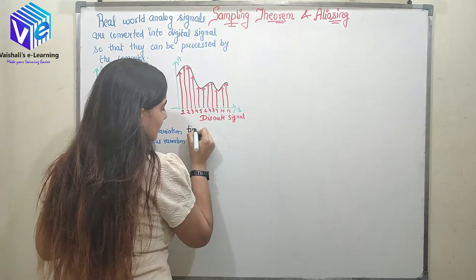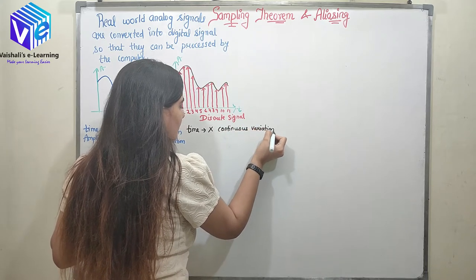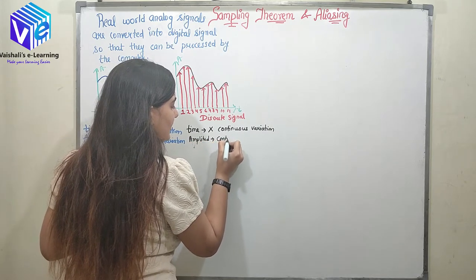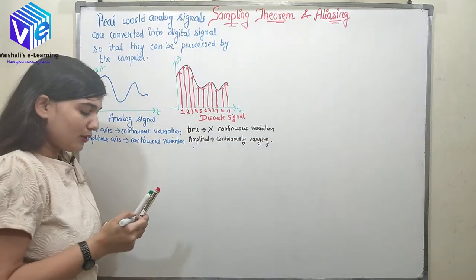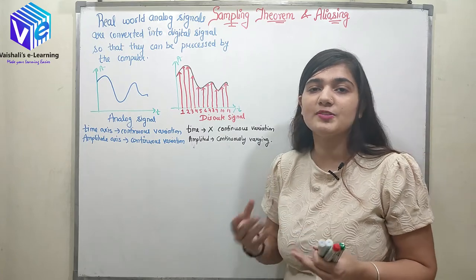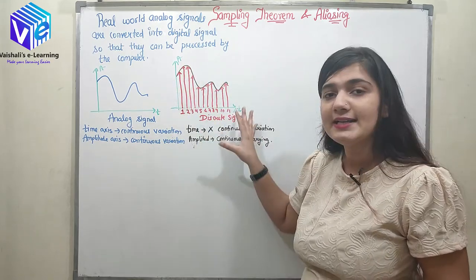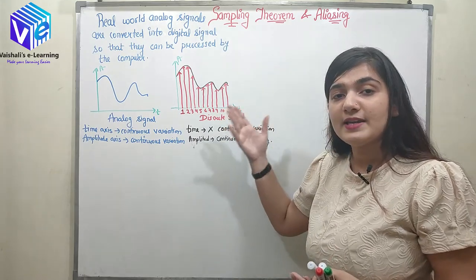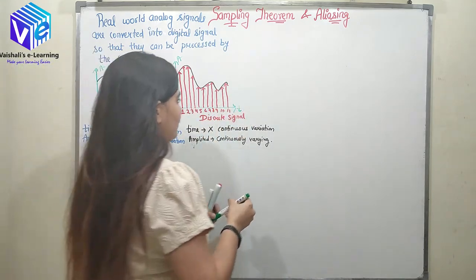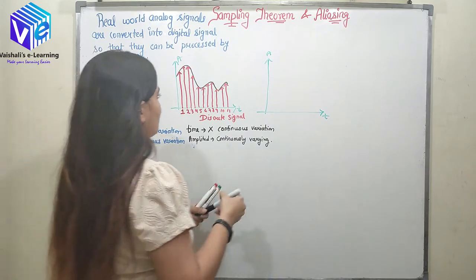Now if I see the time axis, time is not varying continuously. Whereas if I see amplitude, amplitude is continuously varying. Now if I observe the amplitude of the signal at fixed instants of time — if I have a circuit which is measuring the voltage of the signal at 1 second, then 2 seconds, then 3 seconds — we will get a discrete signal. But we need to know what should be this time interval. Let's suppose I have this signal represented by this time interval, and I take the same signal for comparison.